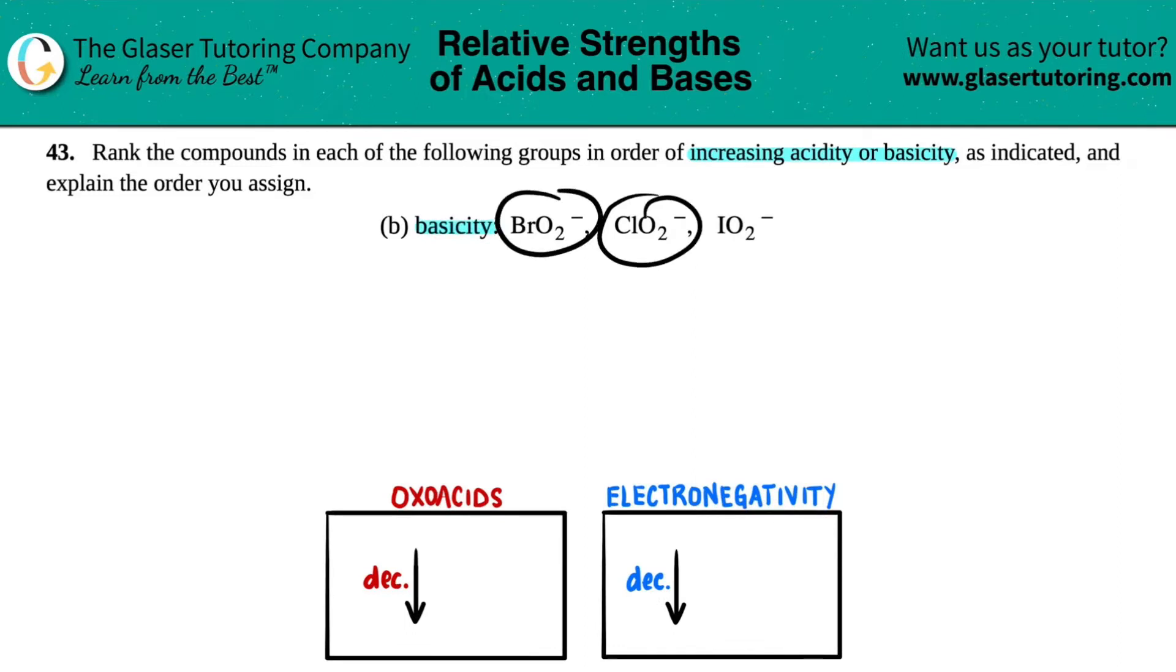They give us three ions here: BrO2 minus, ClO2 minus, and IO2 minus. Let's put our ranking system in place. We need to go from increasing basicity, so we start with the least basic and go to most basic.